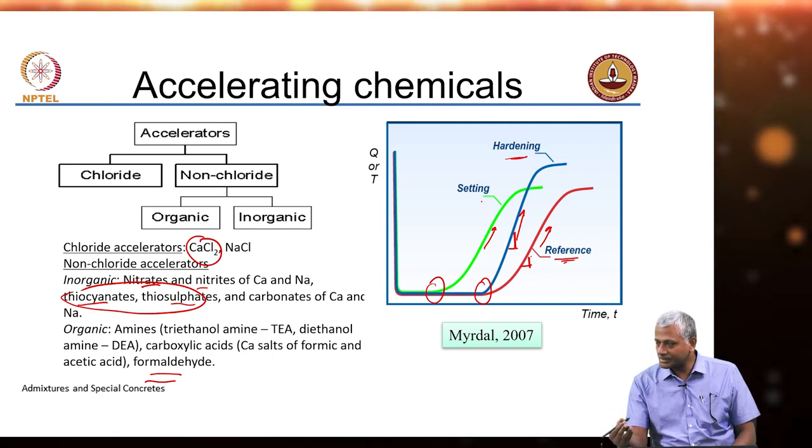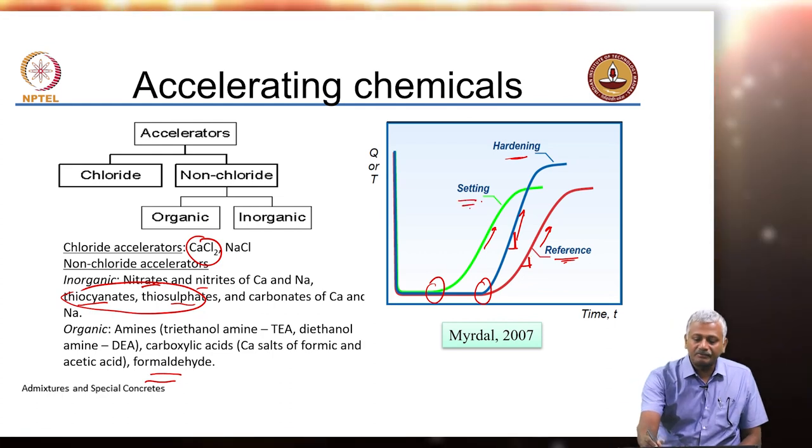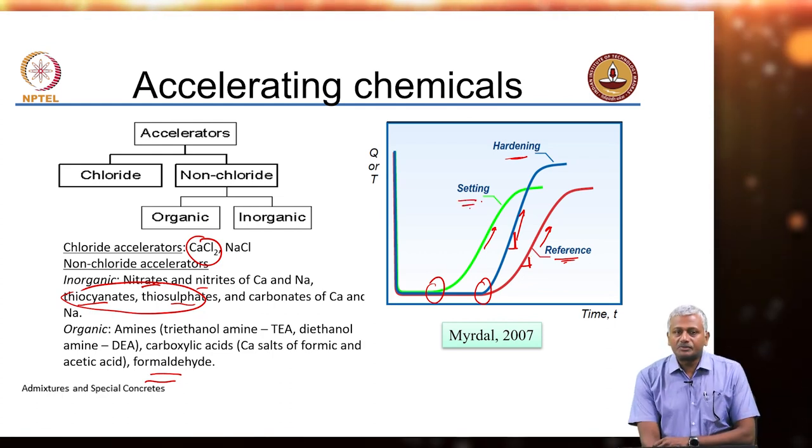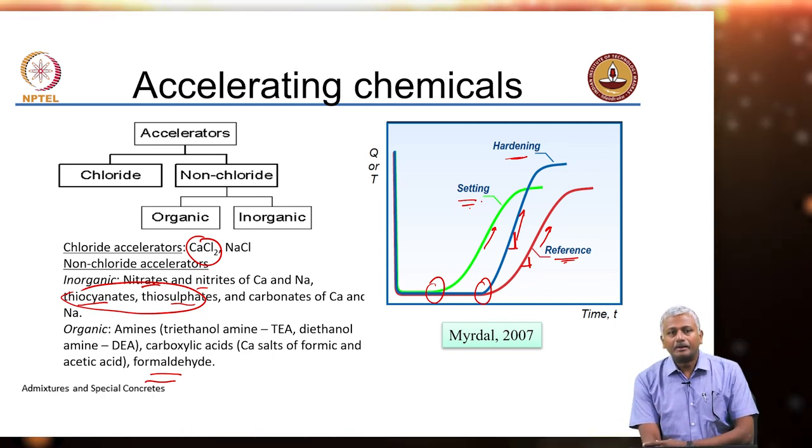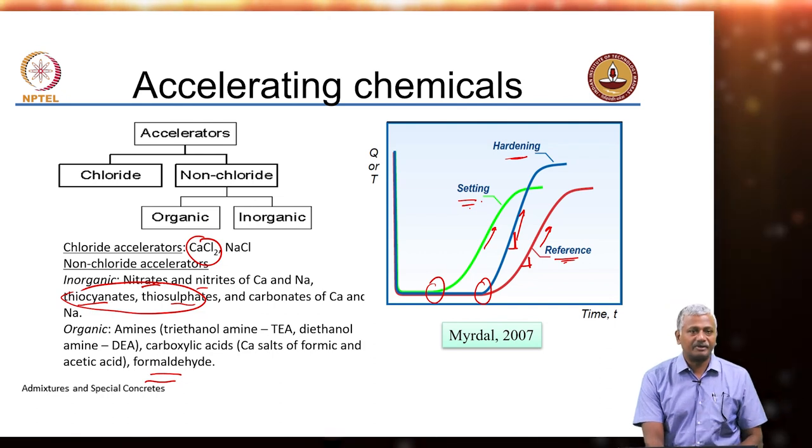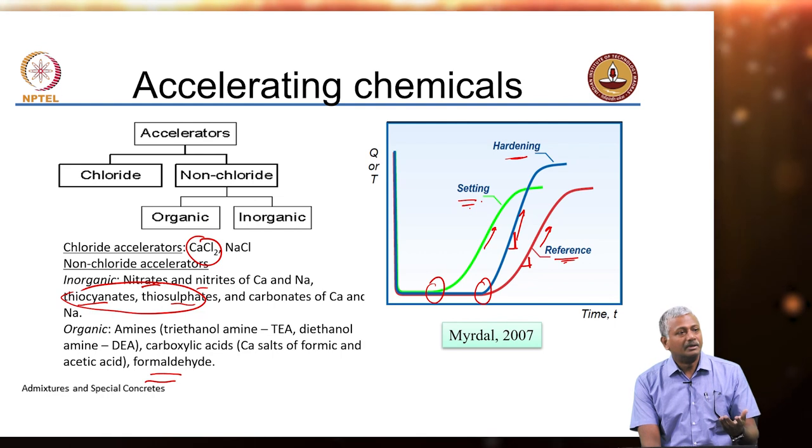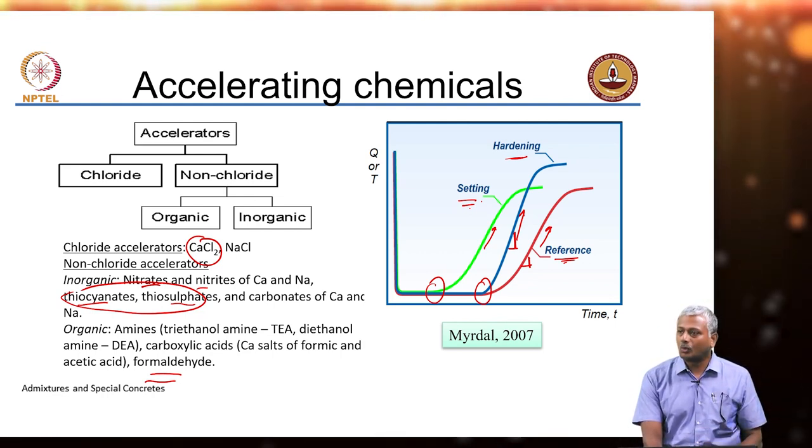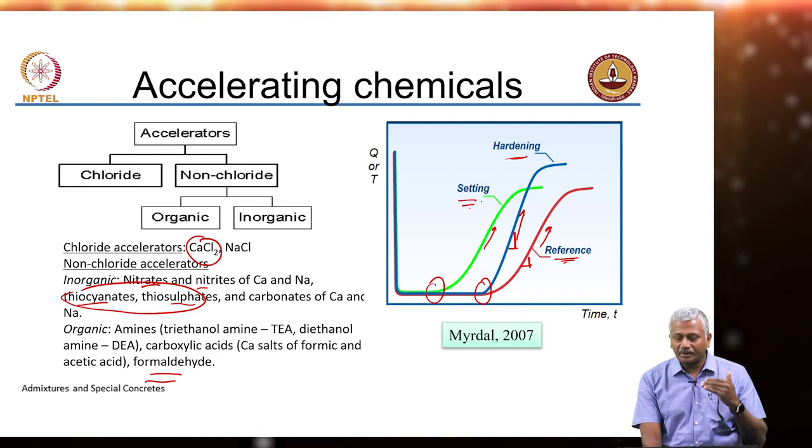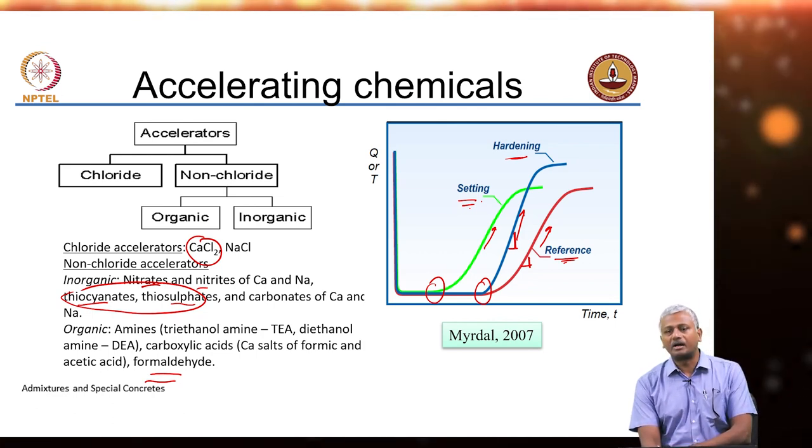If you are working in cold weather, the primary impact is on both setting and strength gain, so generally the setting accelerator will get you there. But in some locations where your option is to go for strength gain, you do not necessarily want setting to happen very fast because you are delivering concrete through a ready mix. If setting happens very fast, the concrete will stiffen in the concrete truck. You want the hardening to happen after the concrete is placed, after the workability requirement is not really there. In such cases you want to use a hardening accelerator.